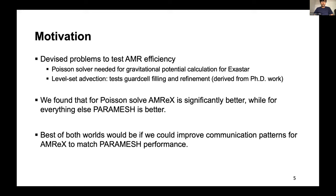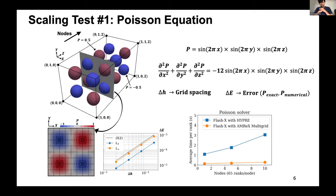The first test uses the Poisson equation with an exact solution defined as a product of sines in x, y, z. The computational domain is structured so you can do weak scaling by extending nodes in any direction. The AMR grid refines in the region of interest. Both Flash-X native (with Hypre) and AMReX's multigrid capture second-order accuracy, but AMReX's multigrid performs an order of magnitude faster.